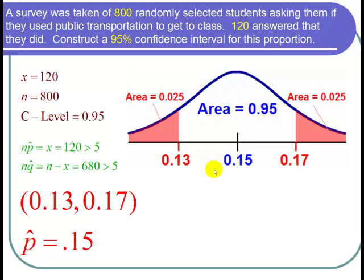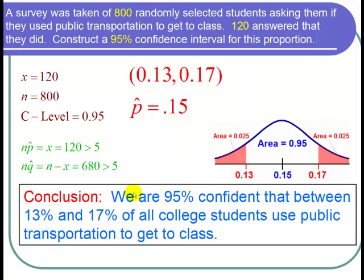So I'm ready to state my conclusion. I can conclude that we are 95% confident that between 13% and 17% of all college students use public transportation to get to class.